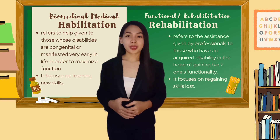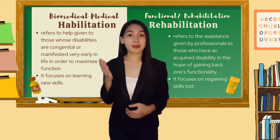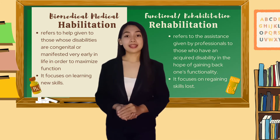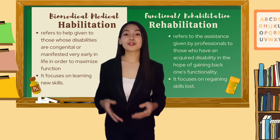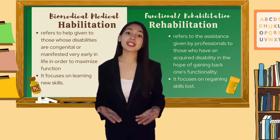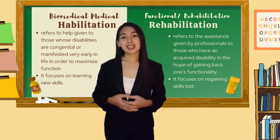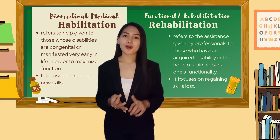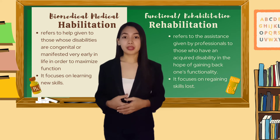The main difference between the biomedical model and the functional model is in the concept of habilitation and rehabilitation. In the biomedical model, it suggests habilitation, which refers to the help given to those whose disabilities are congenital or manifested very early in life, in order to maximize their function. Habilitation refers to healthcare services that help a person acquire, keep, or improve — partially or fully — skills related to communication and activities of daily living.